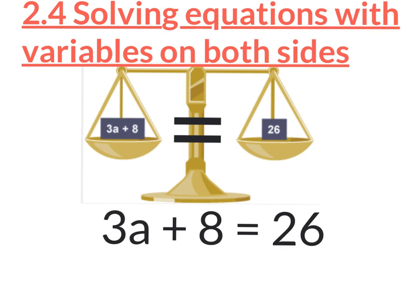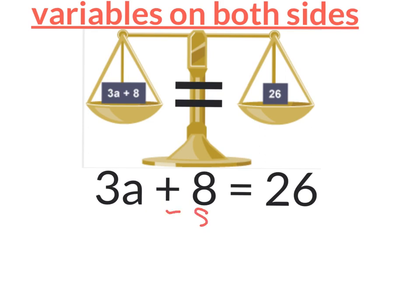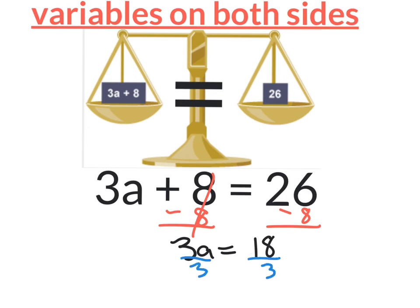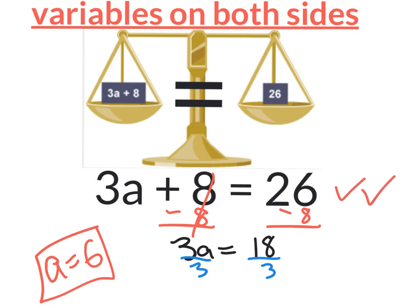Let's get rid of this 8. How do I get rid of the 8? Subtract 8. Which one do I get rid of first, the 3 or the 8? The number all by itself — that's the one we get rid of. What you do to one side, you do to the other. So our new equation says 3A equals 26 take away 8, which is 18. To get rid of the multiplication by 3, divide by 3 on both sides. A equals 6. You can double-check by plugging your answer back into the original equation: 3 times 6 is 18, and 18 plus 8 really is 26. So I know for sure my answer is 6.